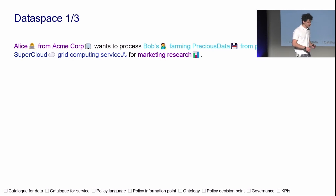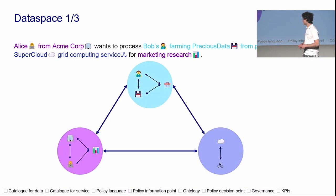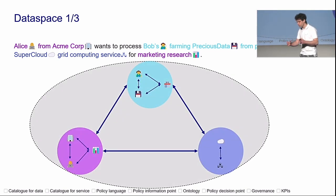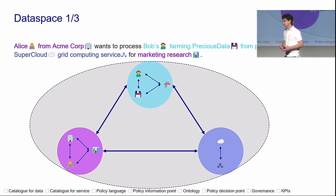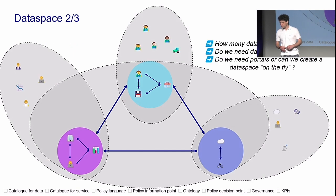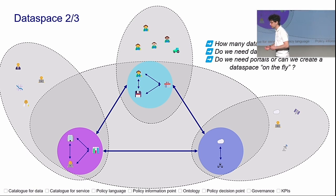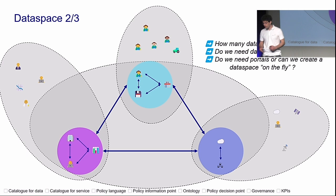We've talked about data spaces before. Using color, I've tried to distinguish three main groups: Alice with Acme and the research institute; Bob with the farming data and Eve, who are working together; and Super Cloud providing grid computing services. Maybe Alice is part of a consulting company — Gartner, IDC, Forrester — and this is their data space. Maybe Bob is part of a farming agri-hub. Maybe Super Cloud is just providing infrastructure. So how many data spaces do you count here?